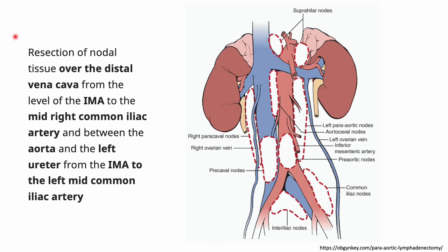Here's a nice clip from UpToDate which talks about the resection of nodal tissue over the distal vena cava from the level of the IMA to the mid-right common iliac artery, between the aorta and the left ureter, and from the IMA to the left mid-common iliac artery. You have ureter here, ureter here, mid-common, IMA. This shows the most common places to do this periaortic dissection — coming over the aorta and IVC, with some spaces laterally. You always have to be aware of where your ureters are during this dissection.